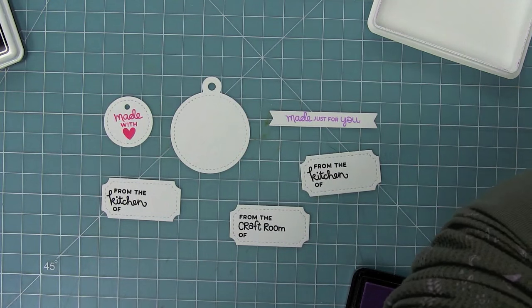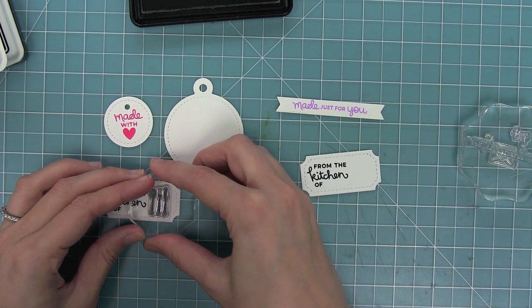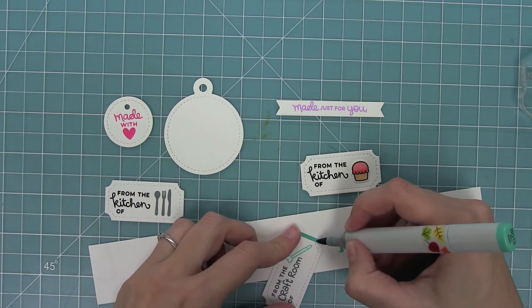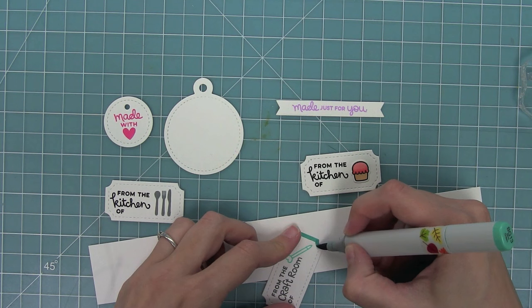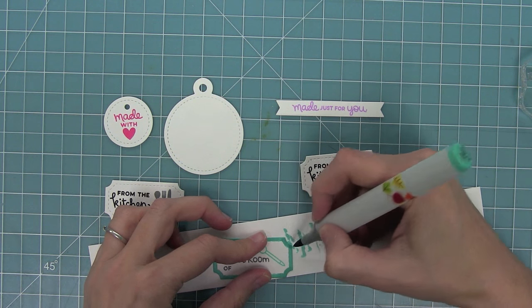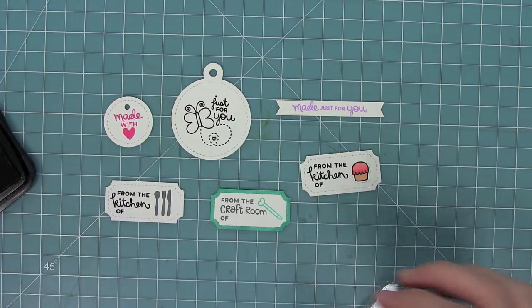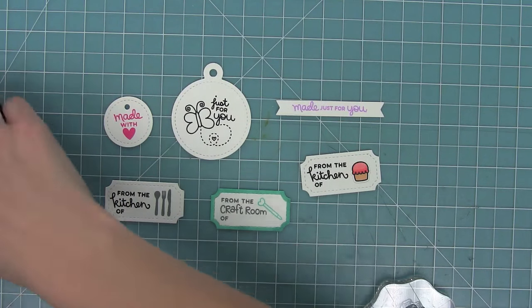When we made Just For You, we sized them to coordinate with a lot of existing dies already. So here is the stitched label die from the Stitch Labels Trio that we have, and you'll see there I'm just coloring it in, stamping in fun colors, and using my markers to color the outside edge. And then I'm also using our stitched circle tags, which also coordinate so perfectly with Just For You.